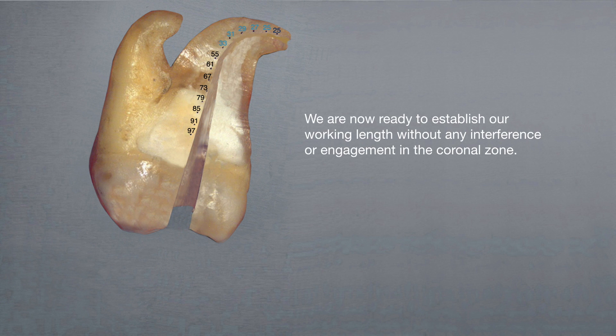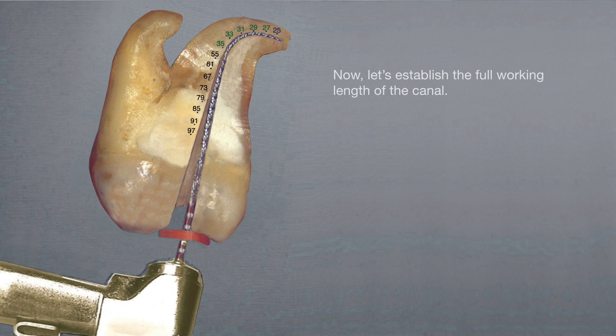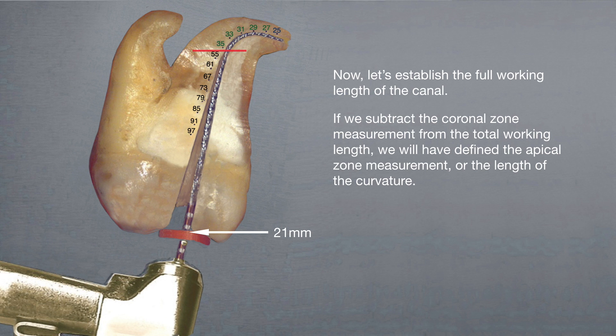We are now ready to establish our working length without any interference or engagement in the coronal zone. Now, let's establish the full working length of the canal. If we subtract the coronal zone measurement from the total working length, we will have defined the apical zone measurement, or the length of the curvature.